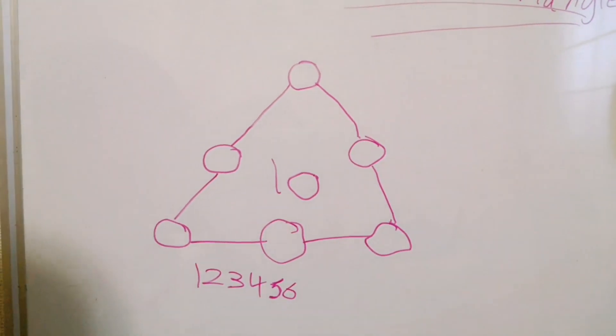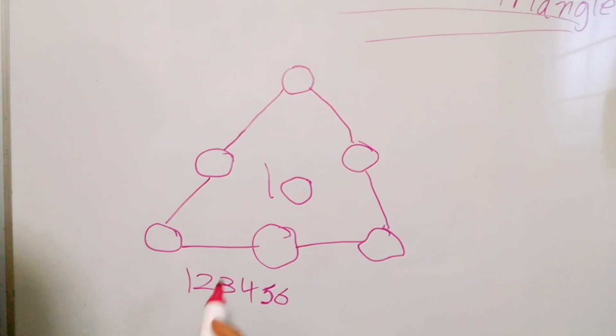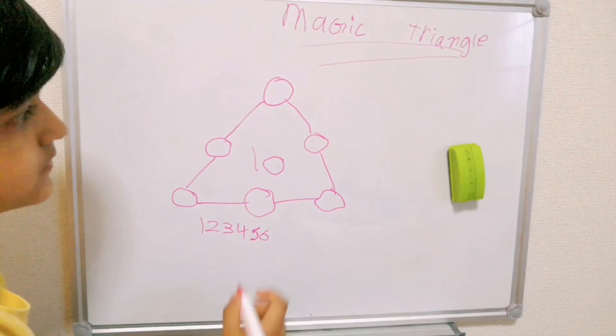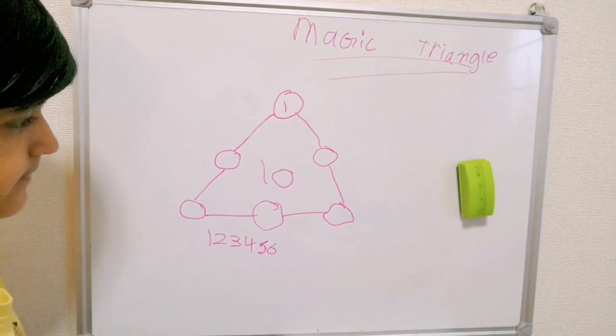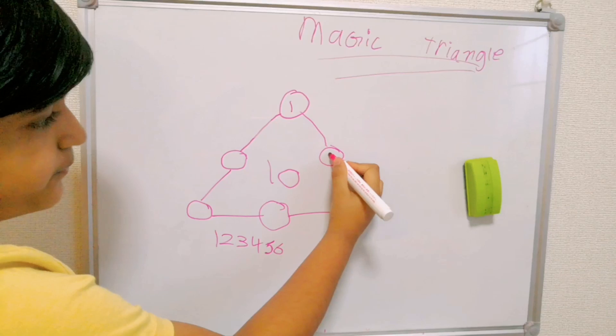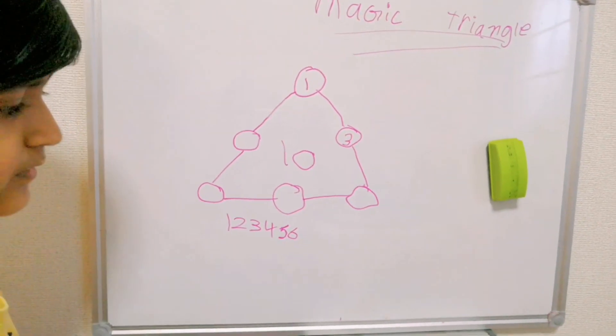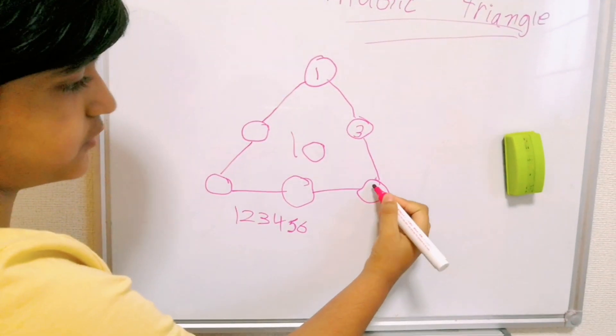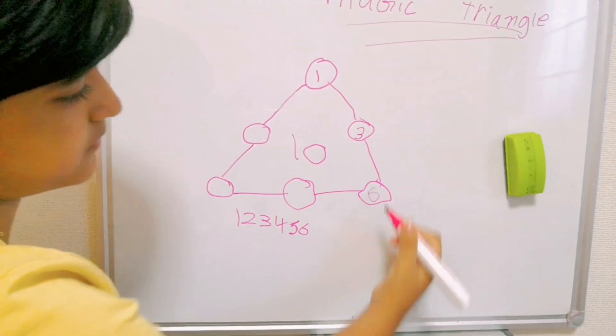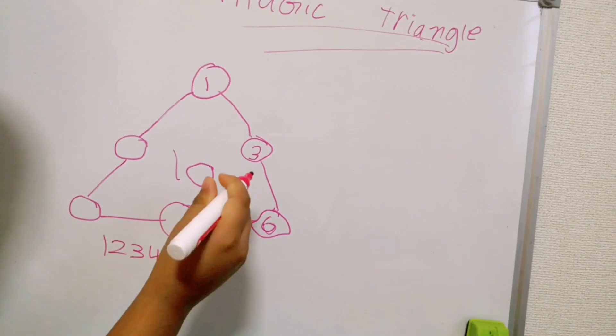So I'm randomly taking numbers from here and putting them in the circles. So I'm placing here 1, 2, 3, 4, and 4 plus 6 equals 10. This side should be equal to 10.